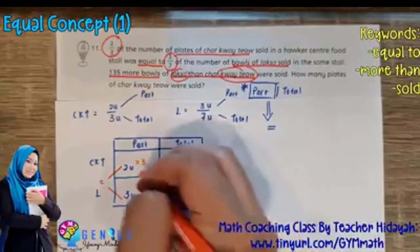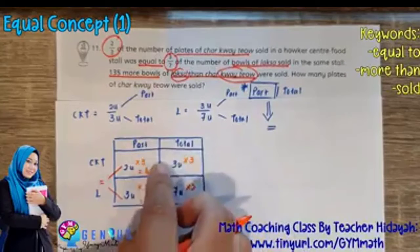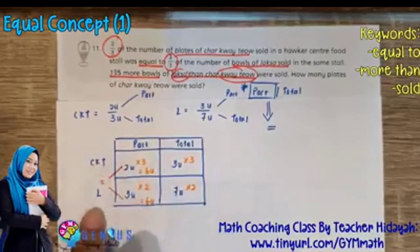So here times 2, here must be 2 times 2. Here becomes 6 units. Here is also 6 units. Now you can see that 6 is equal to 6. Cha Kuei Tiao sold is equal to Laksa sold.